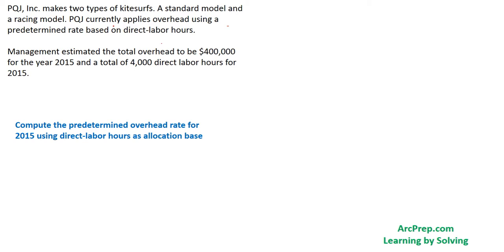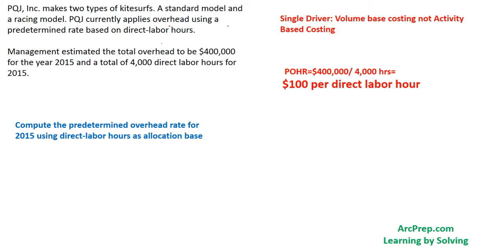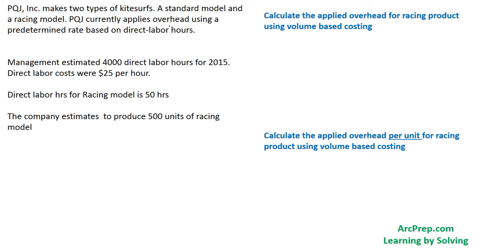We are going to compute the predetermined overhead rate using direct labor hours as the allocation base. Since there is a single driver, it is volume-based, not activity-based. The predetermined overhead rate is simply the total overhead estimated — four hundred thousand — divided by the activity quantity, which is direct labor hours at four thousand. So the predetermined overhead rate turns out to be one hundred dollars per direct labor hour.